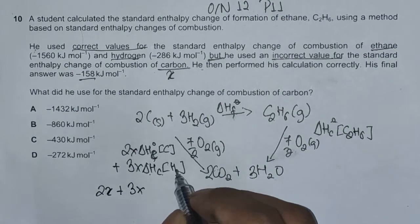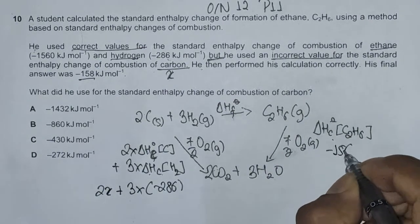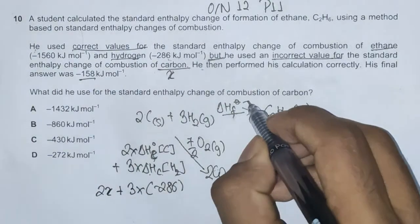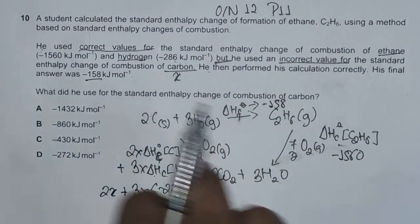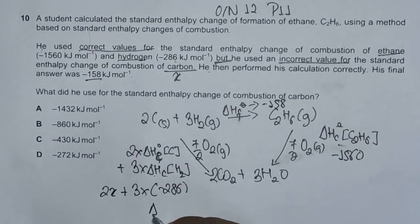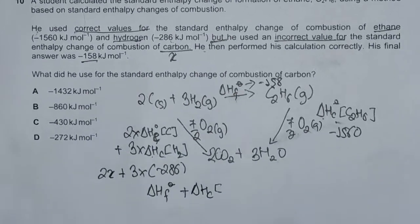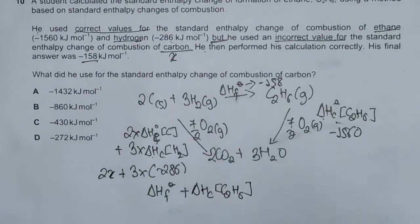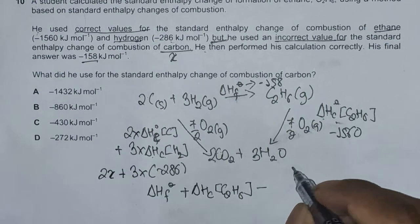ΔHc(H₂) is minus 286, ΔHc(C2H6) is minus 1560, and ΔHf is minus 158. Applying the vector law of Hess's triangle: ΔHf plus ΔHc(C2H6), going with the arrow, then against the arrow for the other side, gives us minus 2X plus 3 times minus 286, equal to zero.